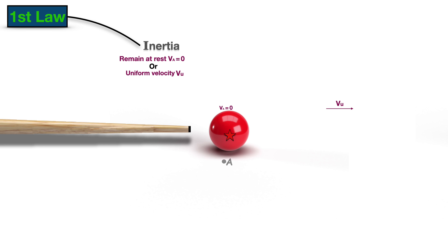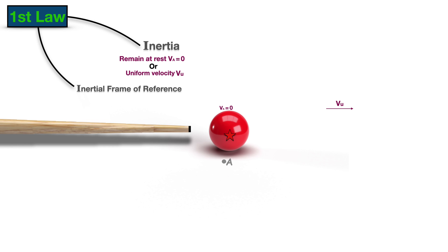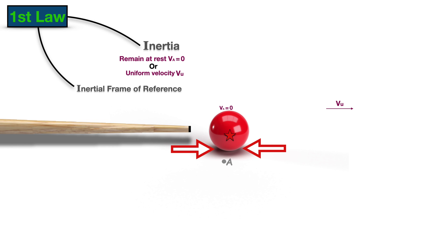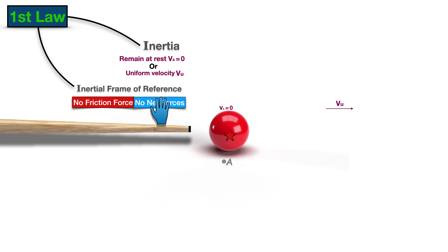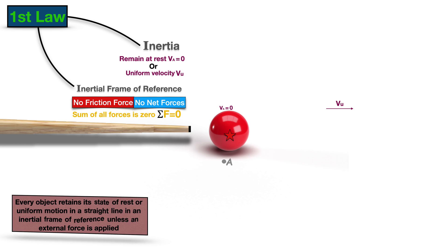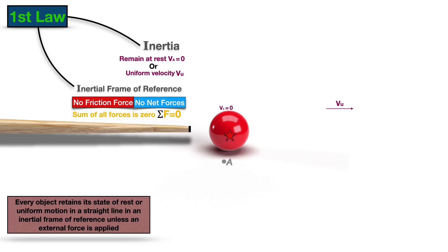Note that to fully obey the first law, the objects have to be in the inertial frame of reference, which means that there shouldn't be any friction force or any other net forces involved — which means the sum of all other forces should be zero. So the first law states that every object retains its state of rest or uniform motion in a straight line in an inertial frame of reference unless an external force is applied to it.